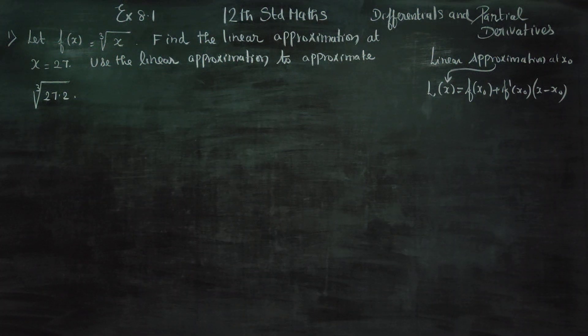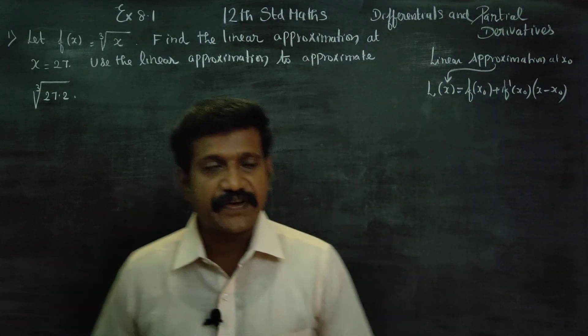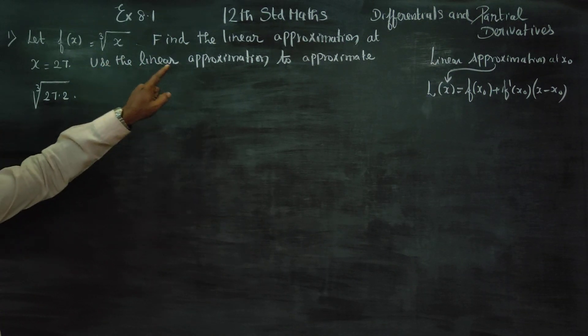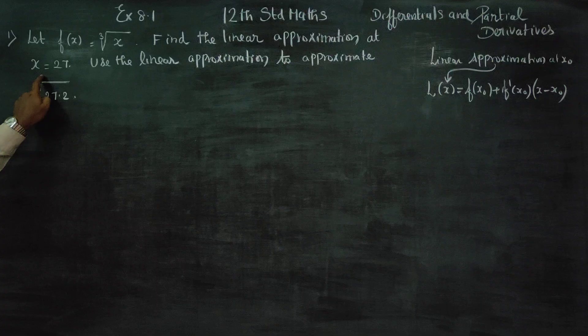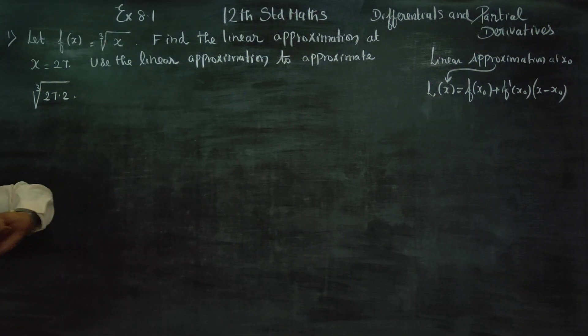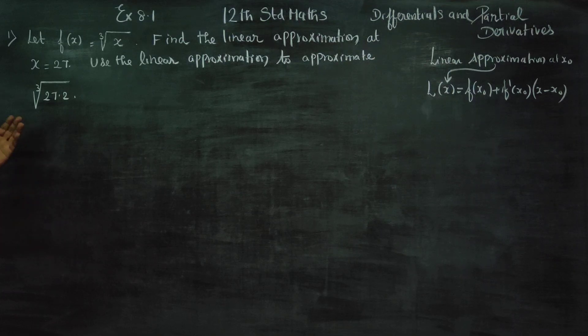Dear 12th standard students, I am Etruh Karanagaran. In exercise number 8.1, sum number 1, let f(x) equal cube root of x. Find the linear approximation at x equals 27. Use the linear approximation to approximate cube root of 27.2.